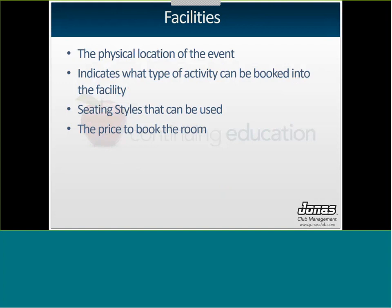When you create your facilities, specify what seating styles can be used — for example, classroom, rounds of 10, or cocktail style. Attach them to individual facilities so only the ones available in that room appear when you book an event. You also need the price to book the room. If you don't charge for facility rentals, you can leave it at zero, but you still need a billing item. If you do charge, you need a billing item — which comes from the point-of-sale sales item called Room Rental or Facility Rental.